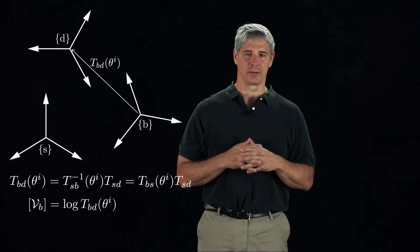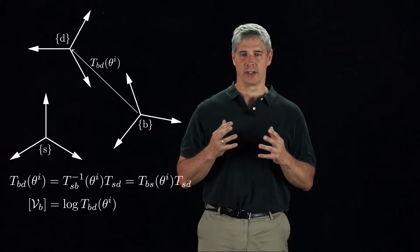Thus, VB serves a similar role as the error vector E in the coordinate version of the algorithm.